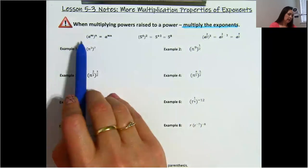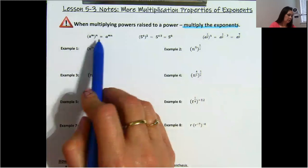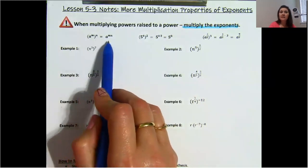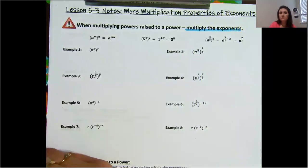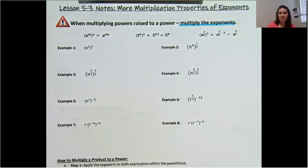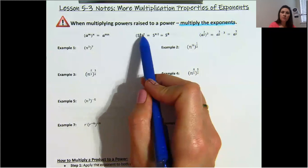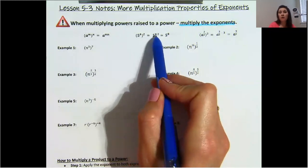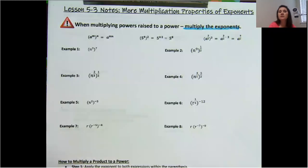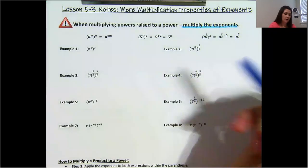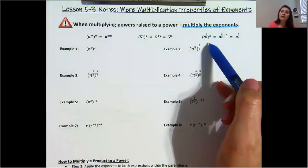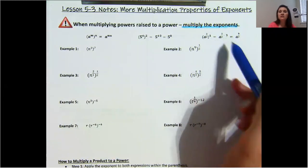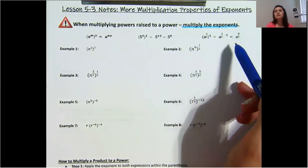In these examples, we have a to the m power raised to the n, so that would just be a to the m times n. Let's apply that to real numbers. 5 to the power of 4 raised to the power of 2 is just 5 to the power of 4 times 2, which gives you 5 to the power of 8. A to the power of 3/2 raised to the power of 3 is just 3/2 times 3, which gives you a to the power of 9/2.